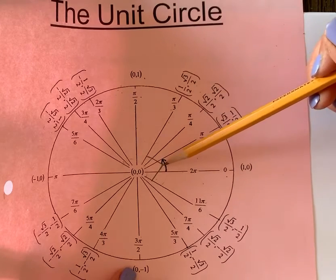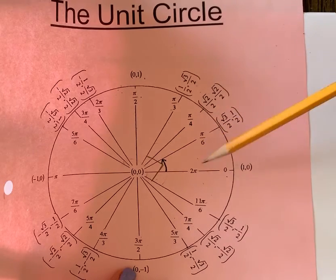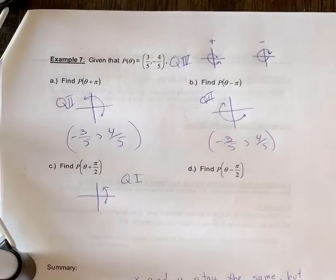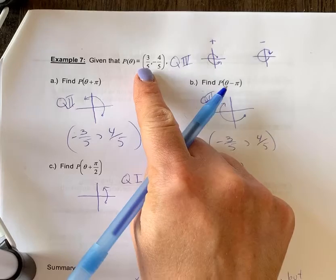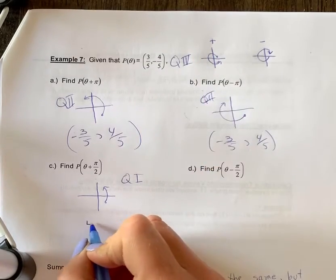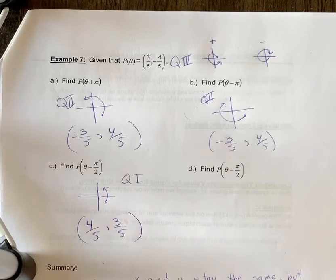So if you move 90 degrees into the quadrant next door, your ordered pairs will switch and then you still apply the CAST rules. So that's what's happened here. So we're in quadrant 1 now. So instead of writing it 3 fifths, 4 fifths, we're going to write 4 fifths and 3 fifths and they're both going to be positive.